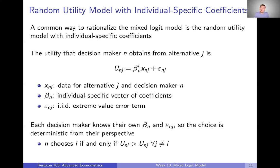From the decision maker's perspective, each decision maker knows their own betas, their own coefficients, their own preferences, and their own epsilon — all of the utility that we don't observe. They know the utility for every alternative. So from their perspective, the choice is completely deterministic: they know the utility for each alternative and simply choose the one that gives them the most utility.